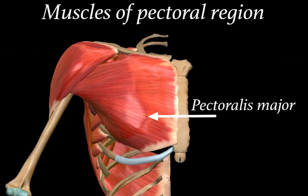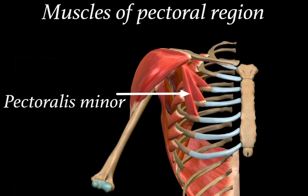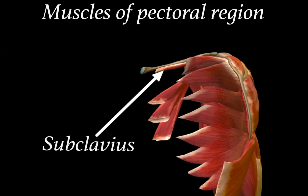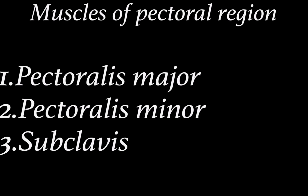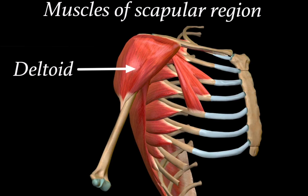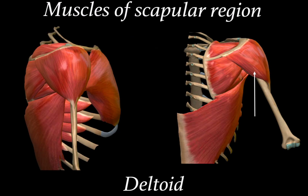First, we will have the muscles of the pectoral region. That is pectoralis major. When we remove pectoralis major we find pectoralis minor. We also find a muscle below the clavicle bone which is known as the subclavius muscle. Hence the muscles of the pectoral region are pectoralis major, pectoralis minor, and subclavius muscle.